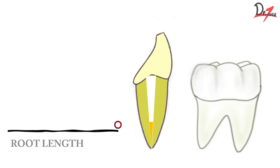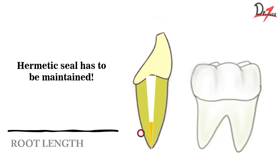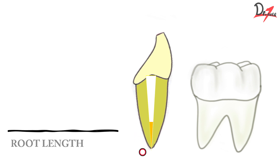When we do the post and core preparation, we prepare the canal keeping in mind that we have to leave three to four mm of gutta percha on the apical portion of the tooth. Because we have created a hermetic seal during the endodontic treatment and we do not want to break that. So keep three to four mm of gutta percha.